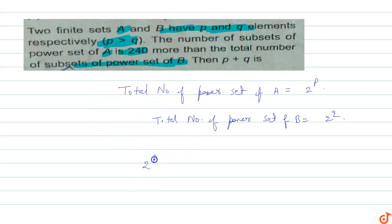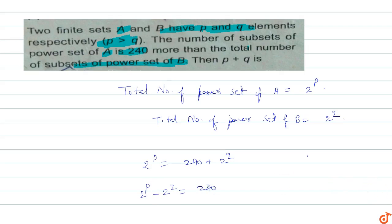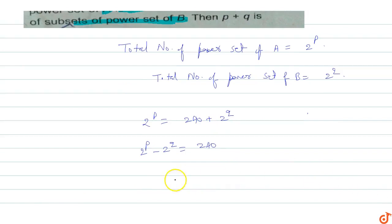So 2^P minus 2^Q equals 240, where P is greater than Q. We can factor out 2^Q as the common term, giving us 2^Q times (2^(P-Q) minus 1) equals 240.